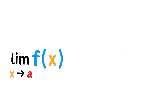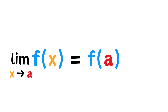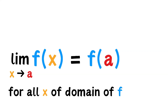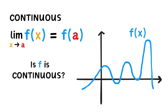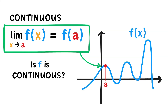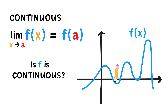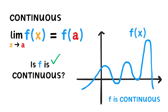Now, if the limit of a function as x approaches a constant is the same as its function value at that point for all x values of its domain, we say that the function is continuous. This may seem like a mouthful, so let's visualize this. Is this function continuous? Well, if we pick a random x value, we see that the limit is the function value at that point. A simple way to determine the continuity of a function, or whether or not it is continuous, is to trace it.